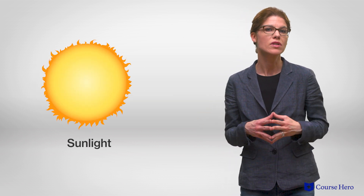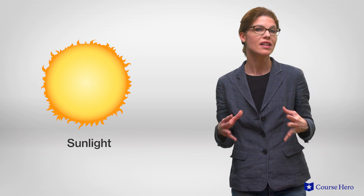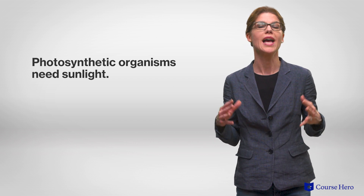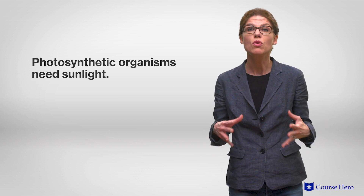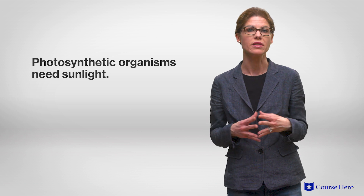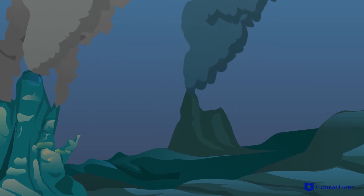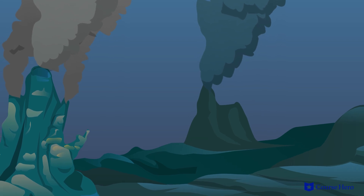Sunlight is another important abiotic factor affecting the geographic distribution of life. Photosynthetic organisms require access to sunlight, and these organisms are often the sources of energy for ecosystems. Subterranean caves and deep ocean environments contain organisms that use alternative energy sources, such as feeding on leftovers that sink from shallow depths. Pressure is yet another abiotic factor that can affect living things. In the deep ocean where pressure is high, only organisms specifically adapted to those conditions can thrive.